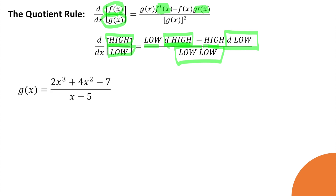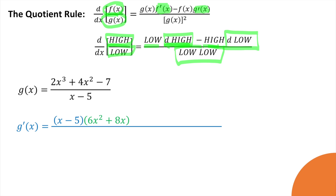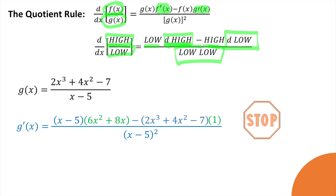Let's give it a shot. For the quotient rule, especially when you're starting out, it's helpful to give yourself a blank slate and fill it in. So first: low — that's x minus 5 — d-high, the derivative of the top function, minus high, just the top function, times d-low, the derivative of the low function, all over the low function squared. Low d-high minus high d-low, all over low-low. Stop here — that's the derivative. Only clean it up if you have to.